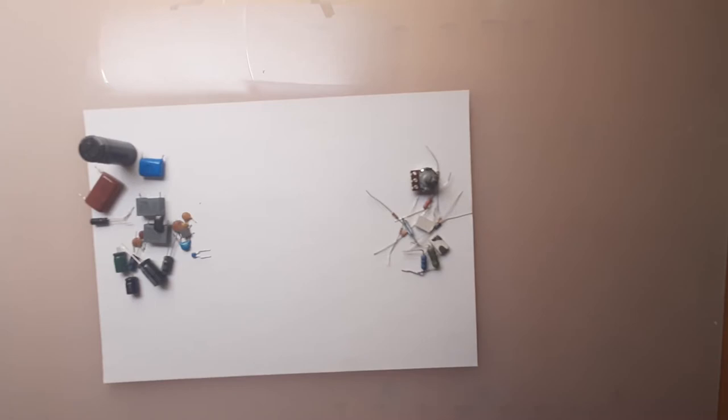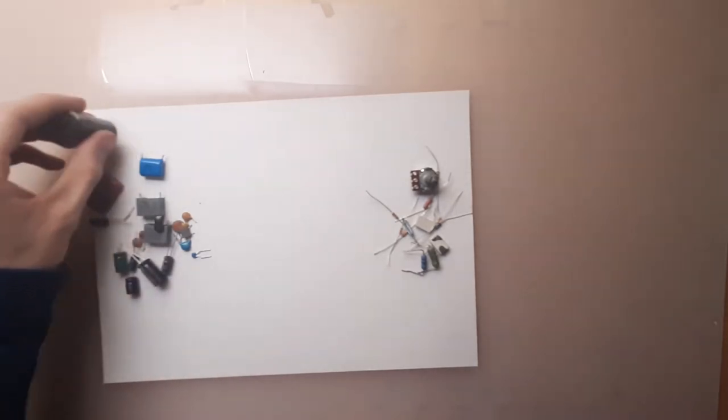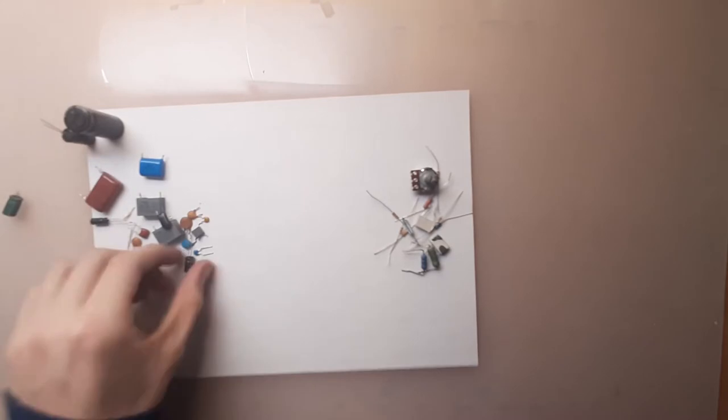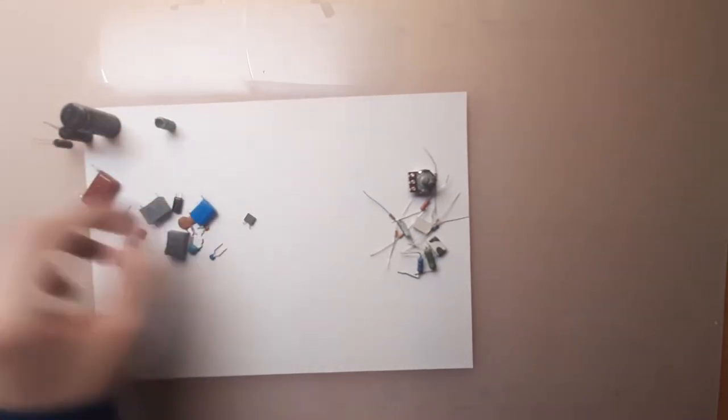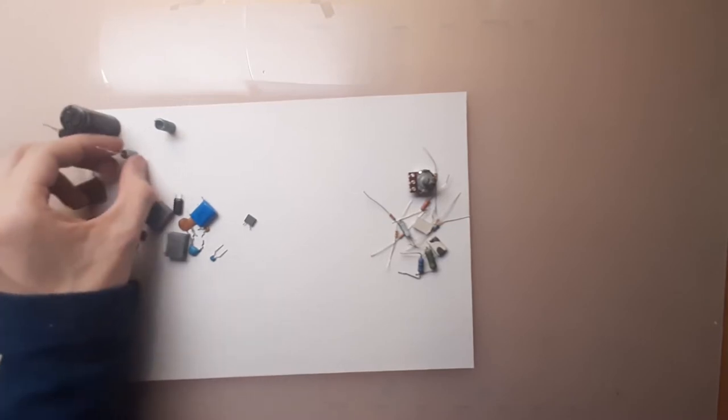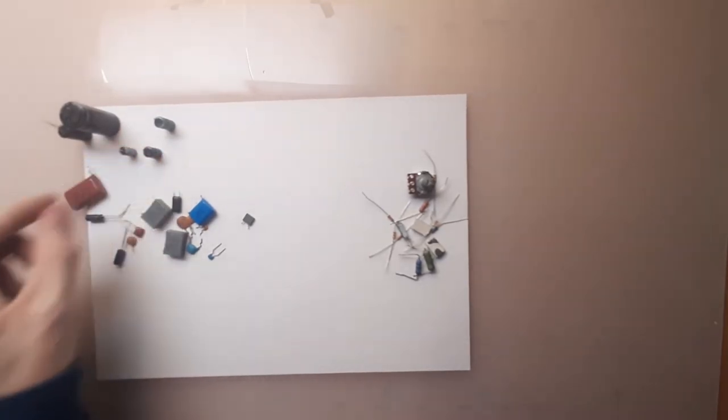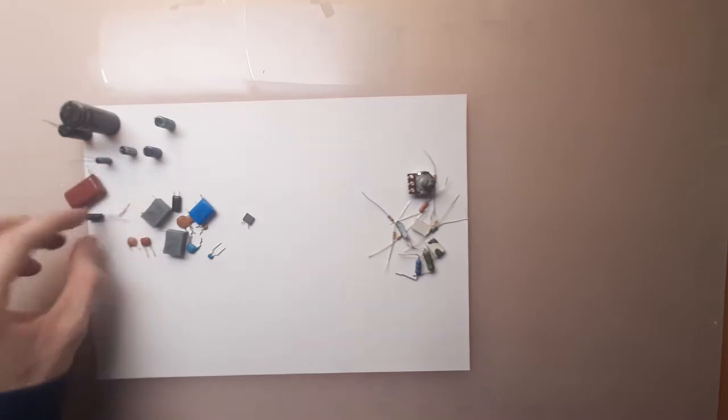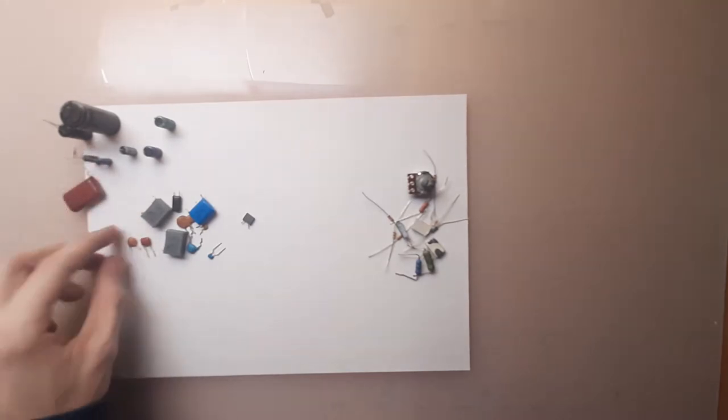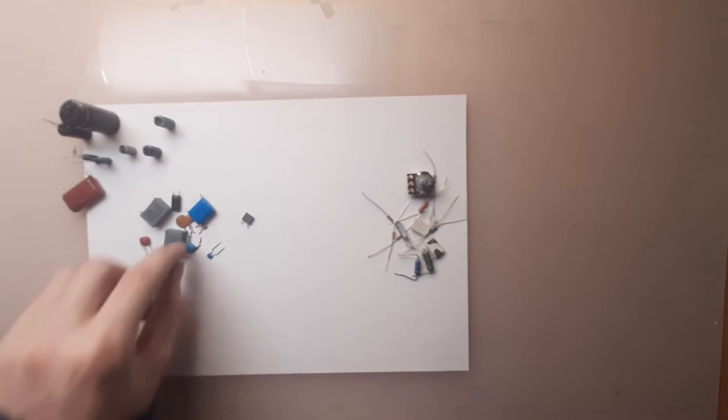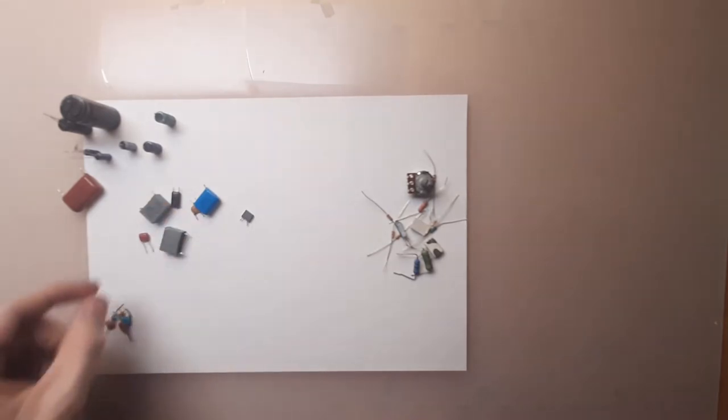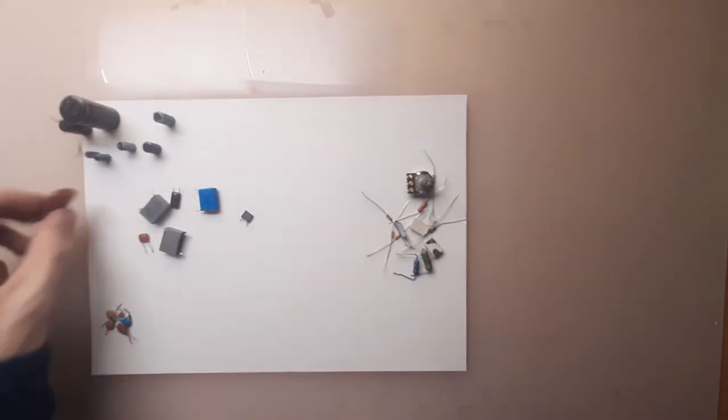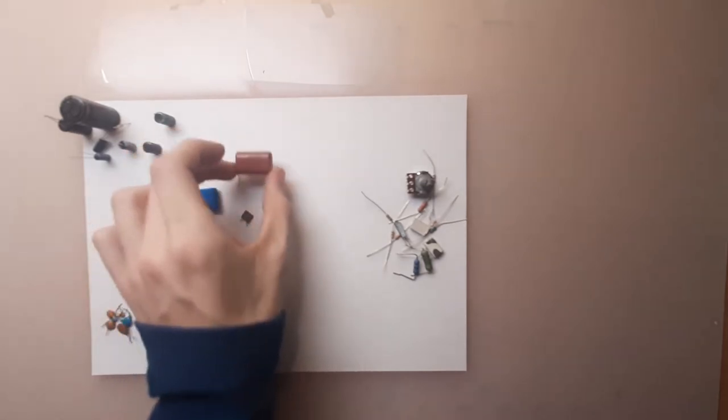Capacitors can be later separated in three more categories. There are electrolytic ones, which are normally in cylindrical shape. There are ceramic ones, which look like these discs or these small rectangles. And then there are film capacitors, which are all these bigger ones.